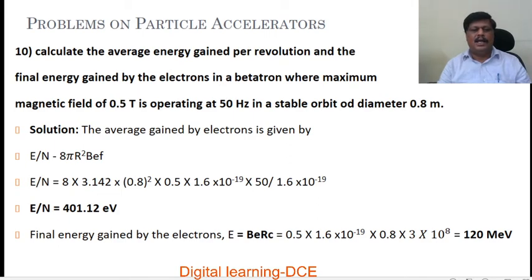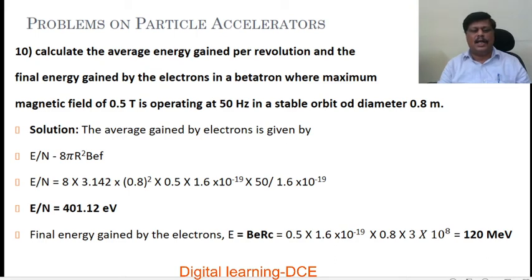Problem number 10. Calculate the average energy gained per revolution and the final energy gained by the electrons in a betatron where maximum magnetic field of 0.5 tesla is operating at 50 Hz in a stable orbit of diameter 0.8 meter. The average energy gained by the electron is given by E by n equals 8 pi r squared B e f. We can calculate average energy gained from this formula.